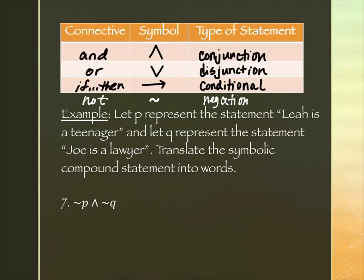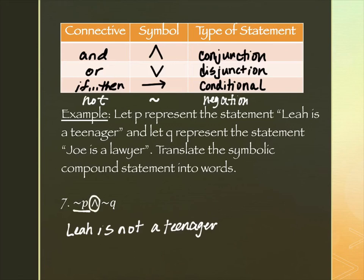So we start with "Leah is not a teenager." Then we have our upside-down V connective — that represents "and" — so we write "and." Then tilde-Q: Q is "Joe is a lawyer," so tilde-Q is "Joe is not a lawyer." The full statement reads: "Leah is not a teenager and Joe is not a lawyer."